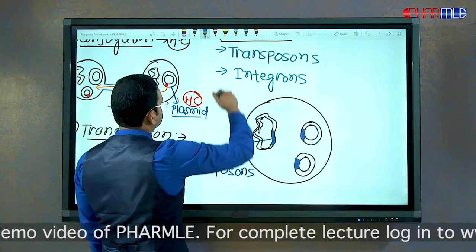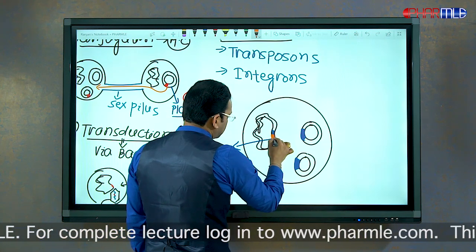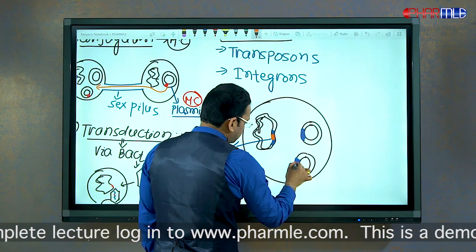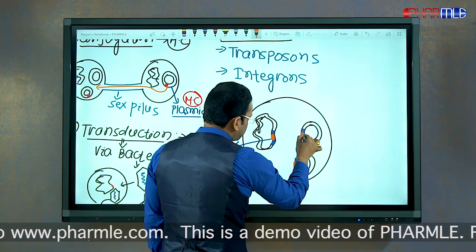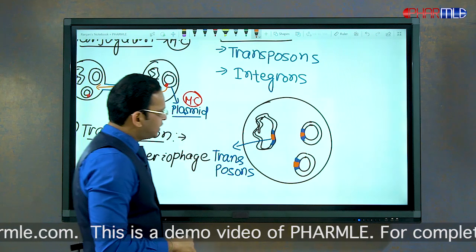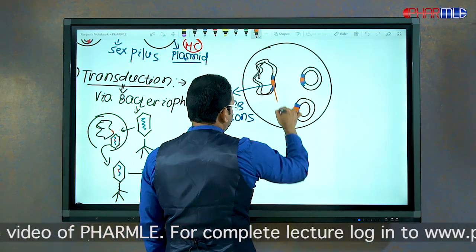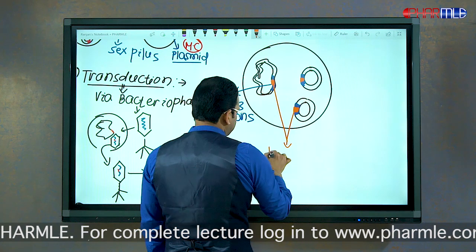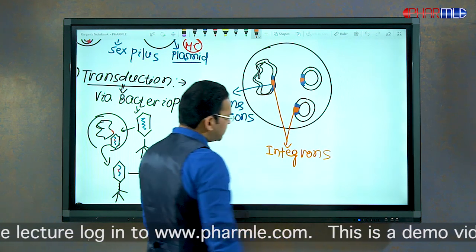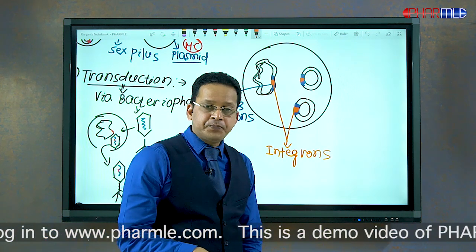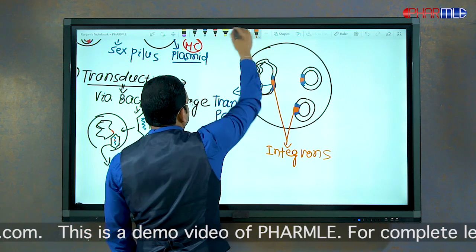Within the transposomes, there are smaller areas shown in brown — these are called integrons. They are called integrons because they contain an enzyme called integrase, and with the help of this integrase enzyme they carry out their function.